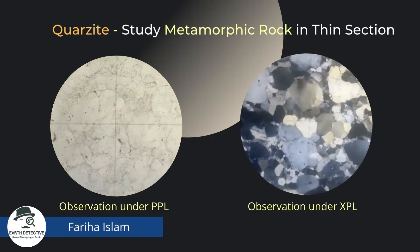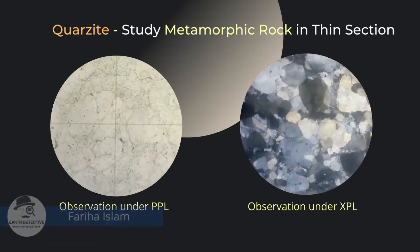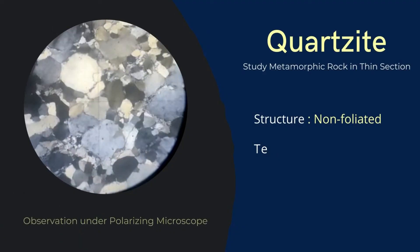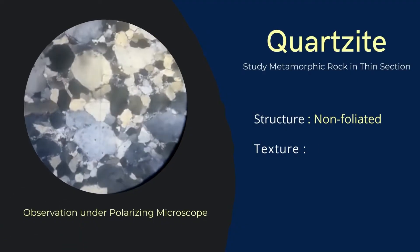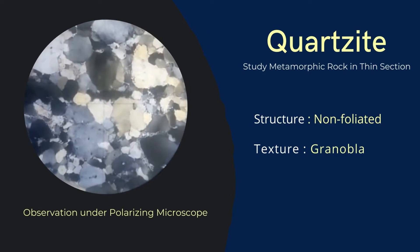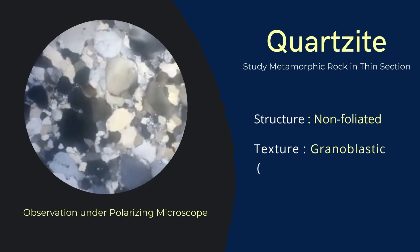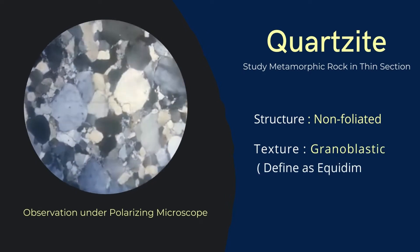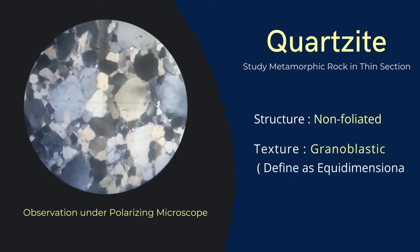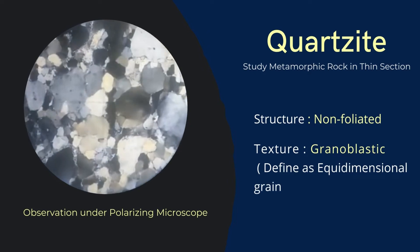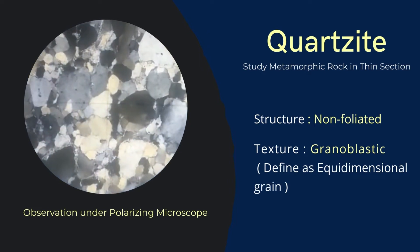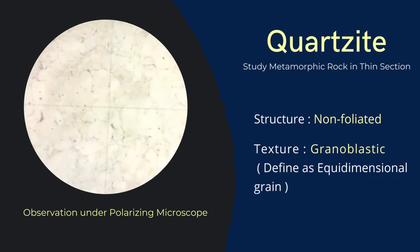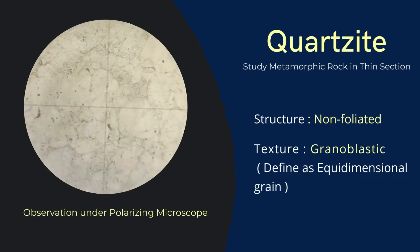Hello everyone, today we are going to study a metamorphic rock under the microscope. The structure of the supplied rock is non-foliated, and the texture of the grains is granoblastic, which is defined as equidimensional grains.